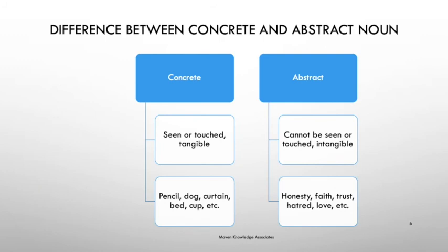The difference between concrete and abstract noun: a concrete noun is one which can be seen or touched — that is tangible. Examples: pencil, dog, curtain, bed, cup. An abstract noun cannot be seen or touched — that is intangible. Examples: honesty, faith, trust, hatred, love. So it's very simple — concrete is tangible, abstract is intangible.